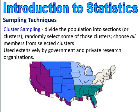The next is called cluster sampling — you divide the population into sections or clusters, then randomly select some of those clusters, choosing all members from the selected cluster. This is used extensively by government and private research organizations. Clustering is dividing the population into sections and studying full sections. Unlike stratified, where you take pieces from each section, with clustering you take the whole cluster or the whole section.